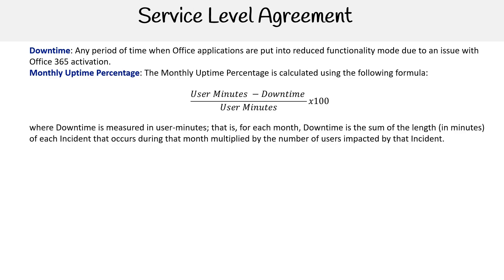Downtime is any period of time when Office applications are put into reduced functionality mode due to an issue with Office 365 activation. The monthly uptime percentage is typically calculated using the following formula, though this may not apply to every service: user minutes minus downtime, divided by user minutes, times 100.